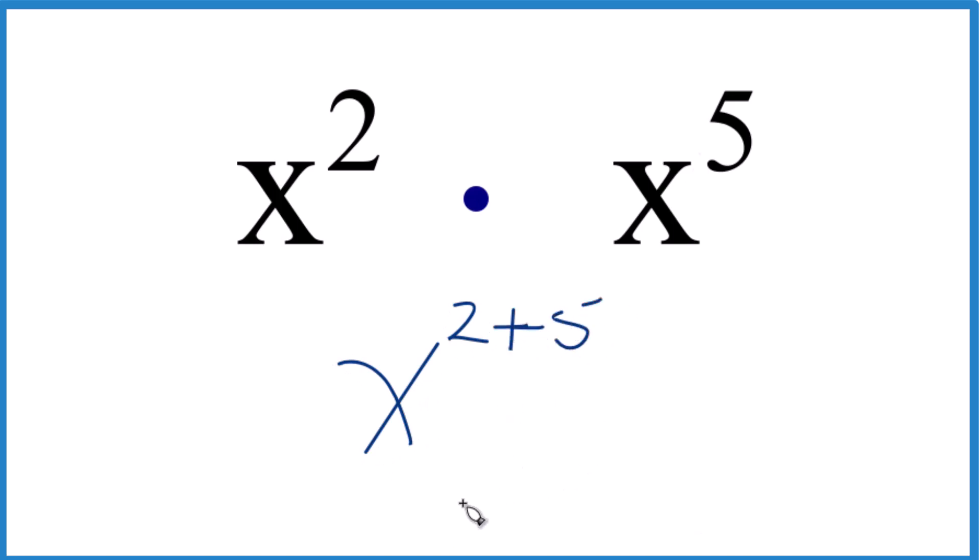So when we do that, we end up with x, two plus five is seven, x to the seventh. So because we have x here, these are the same, x and x, we can just add these exponents together, and that gives us x to the seventh, which is what we found before.